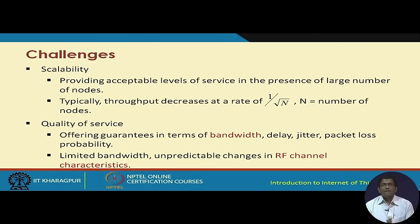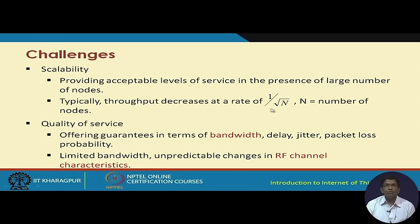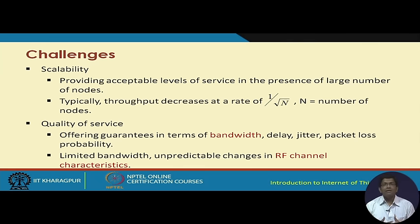There are different challenges in implementing sensor networks. Scalability is one: if you increase the number of nodes, how will throughput behave? It has been shown theoretically that if n denotes the number of nodes, the throughput decreases at the rate of one over square root of n. From two nodes to four to eight to sixteen and so on, the throughput decreases quite fast. How do we handle scalability given that sensor networks inherently involve large numbers of nodes?